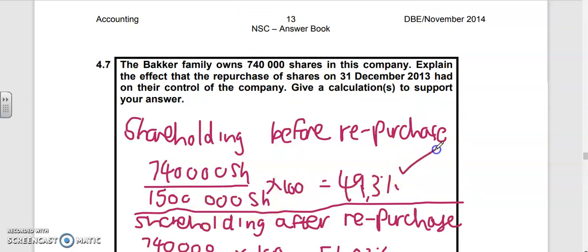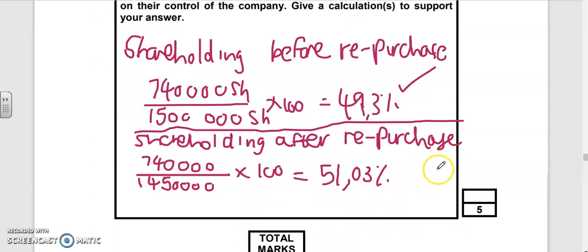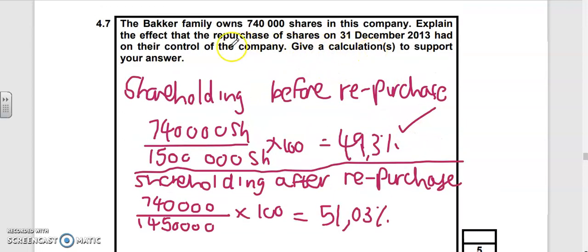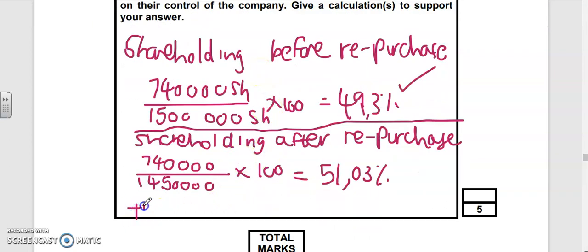After the repurchase, minus the 50,000 shares, we're left with 1.45 million shares. They held 740,000 divided by 1.45 million times 100 - they now hold 51.03 or 51 percent of the shares. When somebody holds 51 or more shares, they are the majority shareholder. The effect is that they are now majority shareholders.